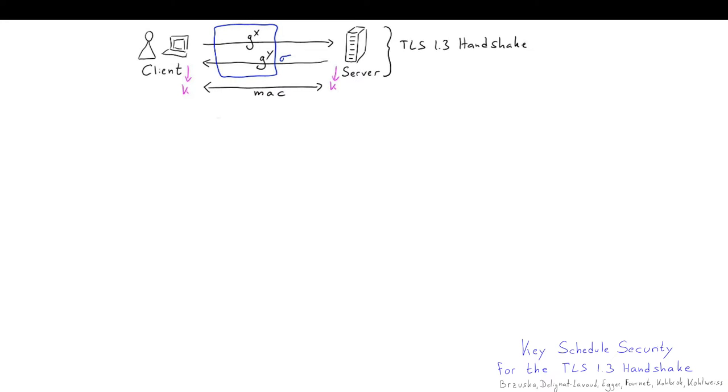Additionally, the client and the server might have a pre-shared key, and if so, then the client sends over the ID of this pre-shared key and a binder value that binds the pre-shared key to the transcript. The resulting session key should be secure if the PSK was honest or the Diffie-Hellman secret was honest.